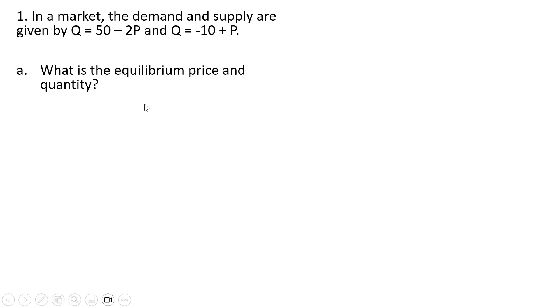What is the equilibrium price and quantity? We're going to set the quantity demanded equal to quantity supplied. 50 minus 2P equals minus 10 plus P, and now we're going to solve for P or the price.